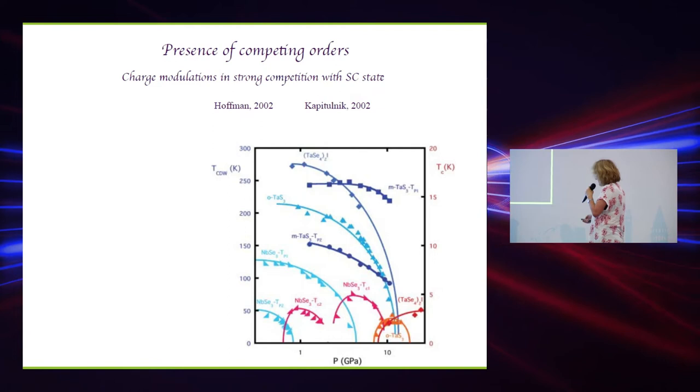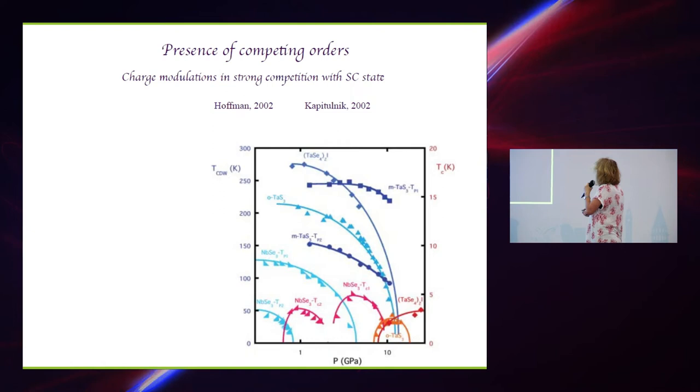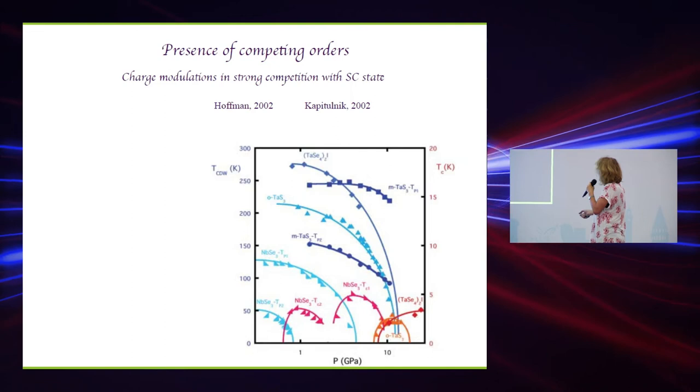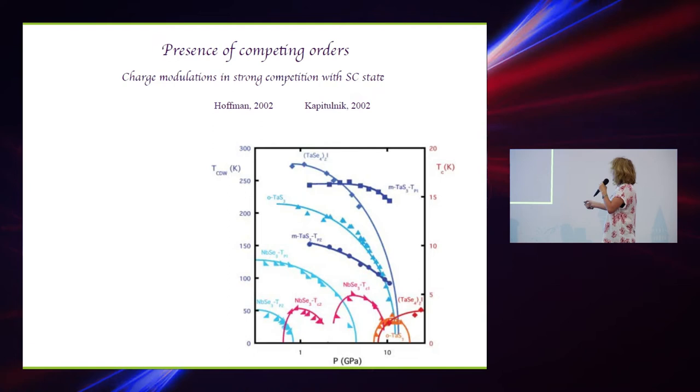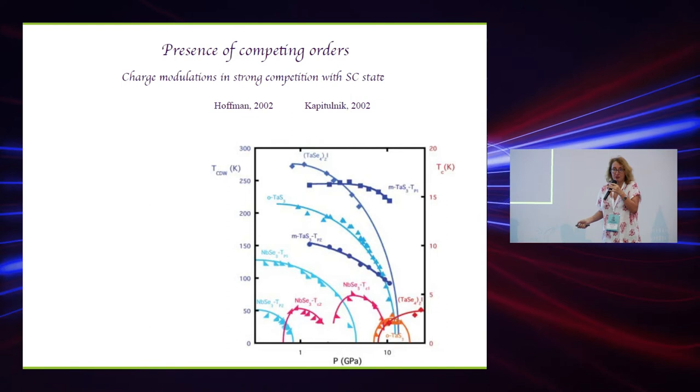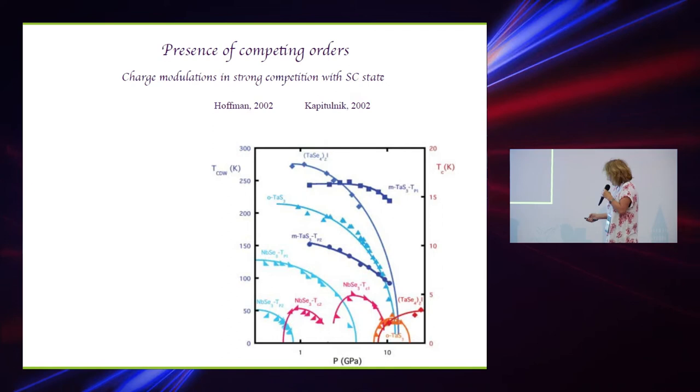So, the presence of charge order in competition with superconductor is something which is also not new. You see this very famous example of the niobium selenide, where the charge order is here in blue and superconducting phases are in red here. You see the difference with cuprates? It's roughly three to four, five times order of magnitude smaller. In cuprates, the temperature Tc and T charge order are of the same order of magnitude.